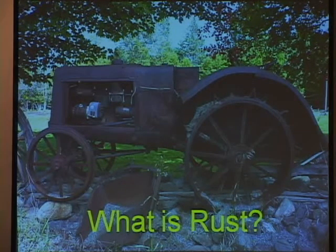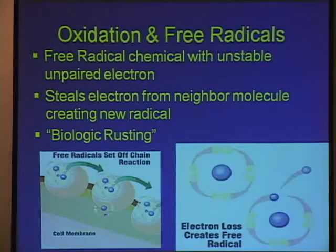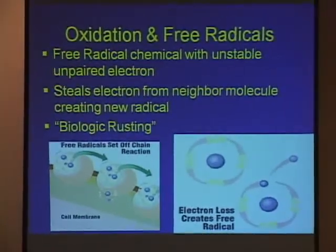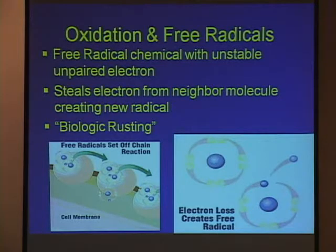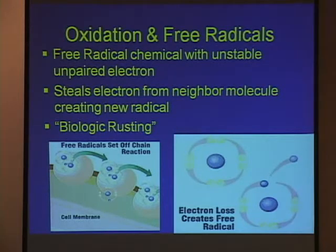What's rust? We're now going to talk about oxidation and free radicals. Free radicals are chemicals with unpaired electrons. Remember back in your chemistry days, there's all these orbits of electrons rotating around the atom, and when I have an unpaired or lone electron, what happens to that molecule or atom? It's unstable.